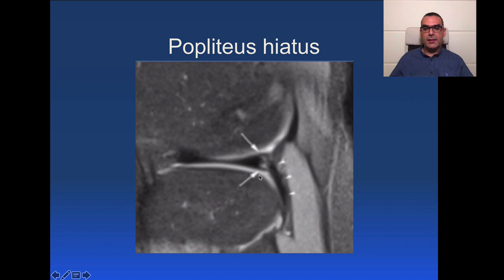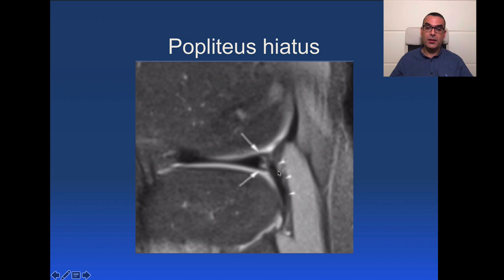Next is the popliteus hiatus. The popliteus tendon passes right behind the posterior horn of the lateral meniscus within the meniscal-capsular attachment, and this defect is called the popliteus hiatus. This should never be mistaken for a peripheral meniscal tear.